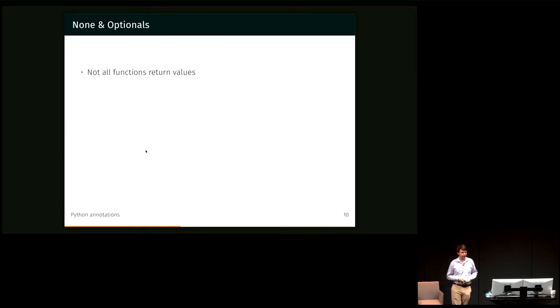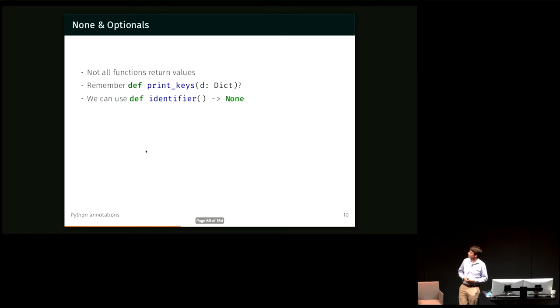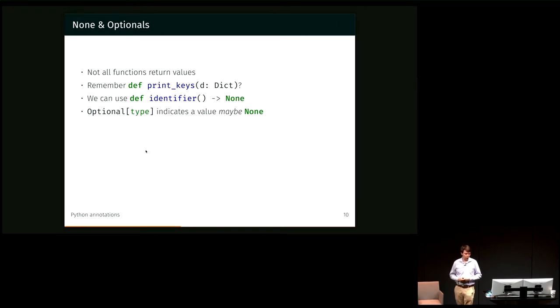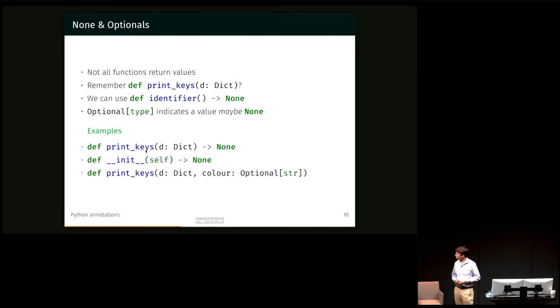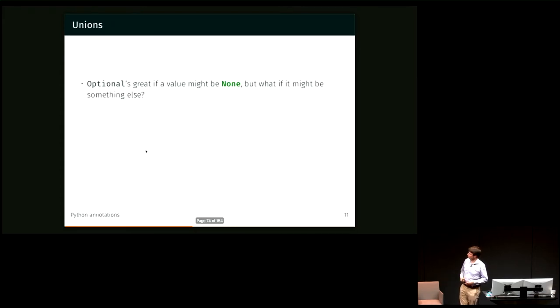So not all functions return values, right? We might be returning none, like in the print keys example from the dict page. So we can annotate that just with none, just say we're returning none here. Or we can use optional to say that we might return none or we might return something else. Like when I showed the example of the manifest contents that might return the, I think it was a string, or it might return none if the contents was none. So init for example always returns none. Or we might say we can print keys in some sort of color and that's an optional string.